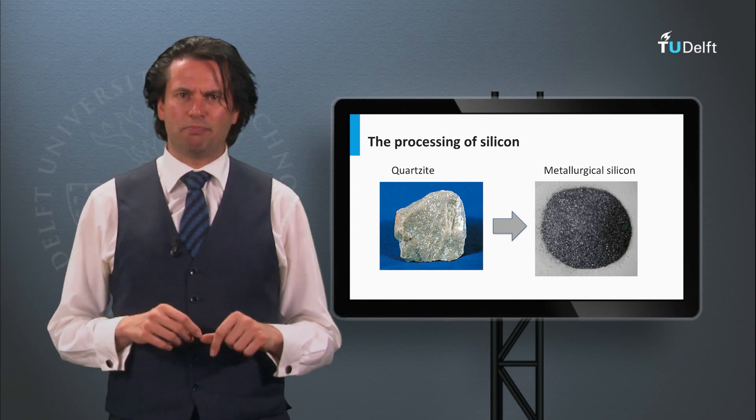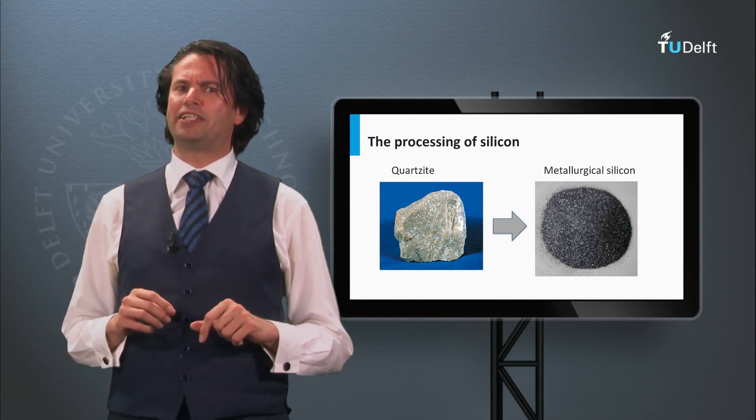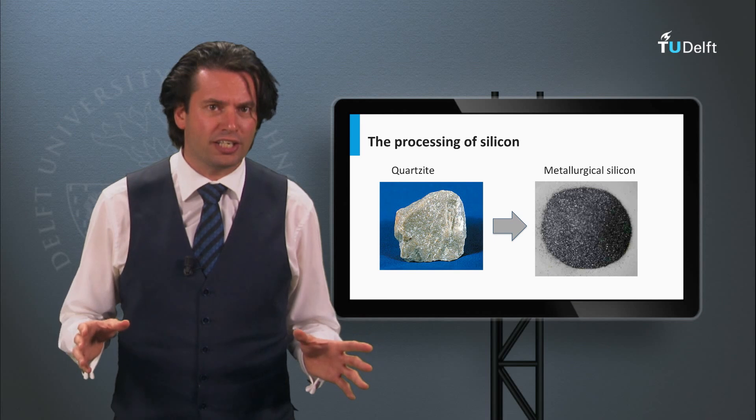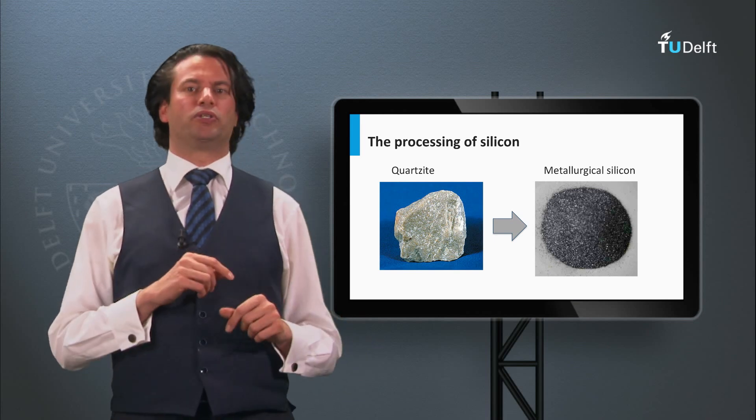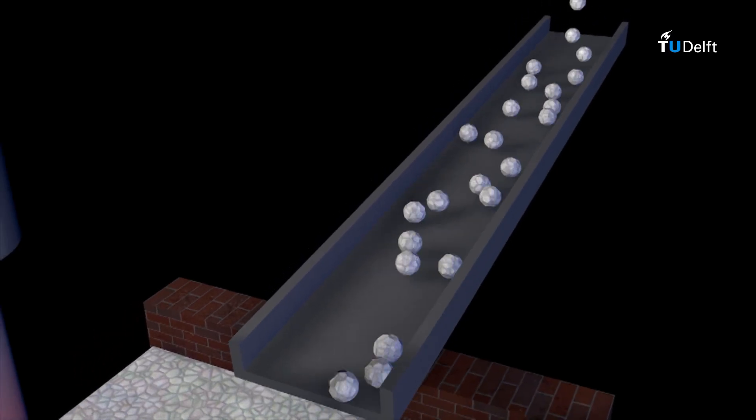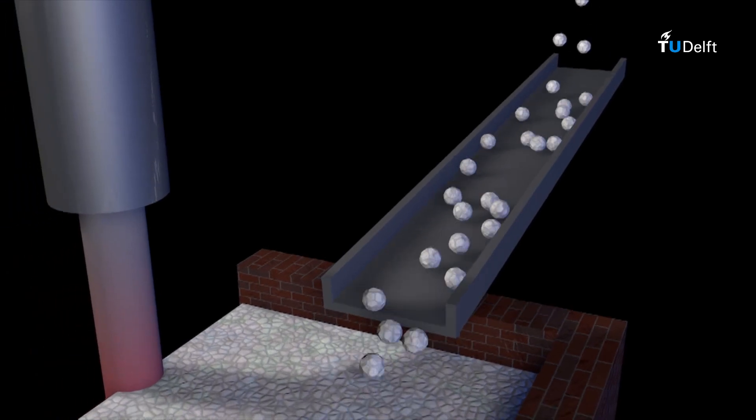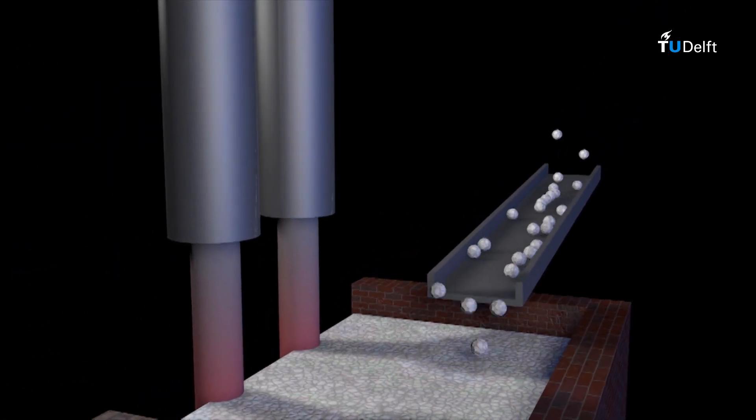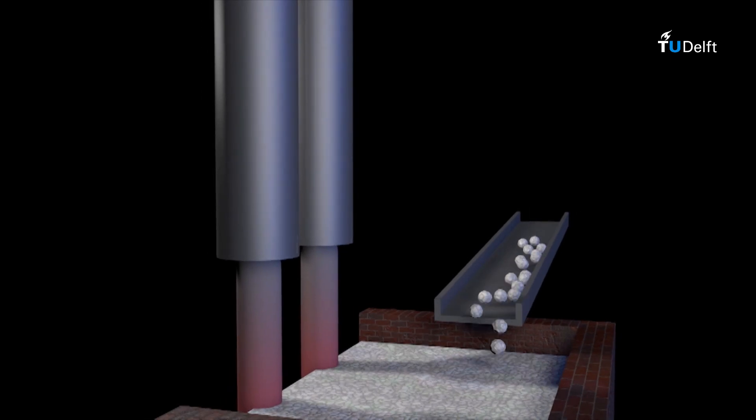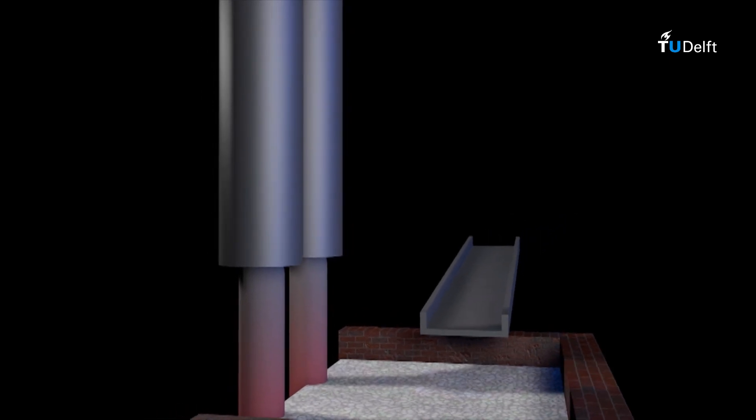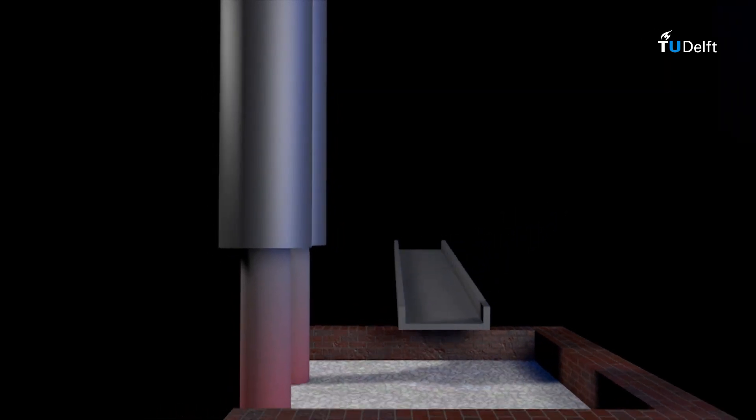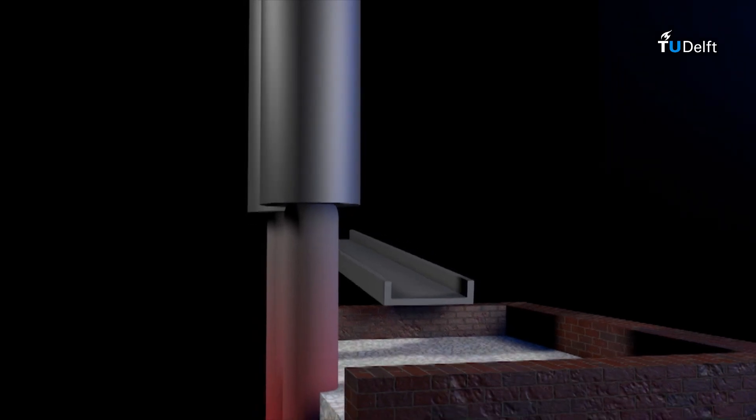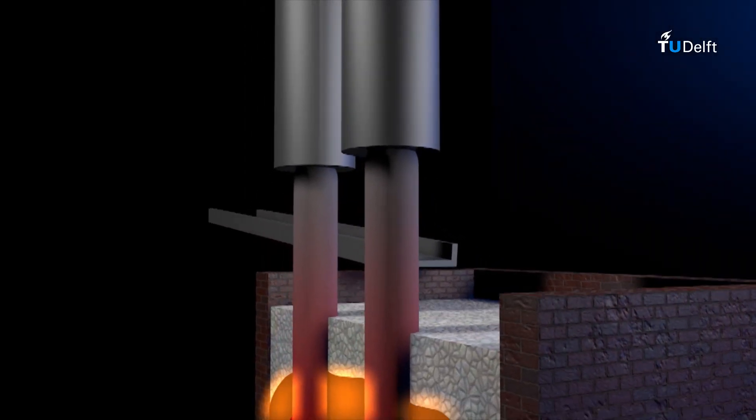In the next animation the process of making metallurgical silicon out of quartzite is shown. During the production the silicon is purified by removing dioxide. This happens in a submerged electro arc furnace. The quartzite is moved into the furnace where it is melted. Using an electrode the quartzite is heated up to a temperature around 1900 degrees Celsius.